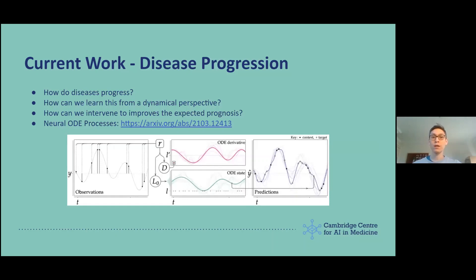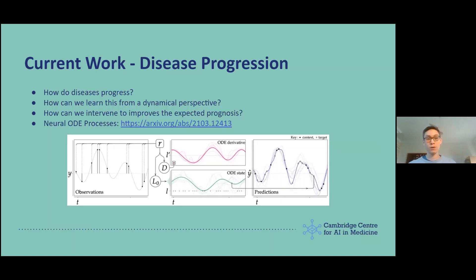Another bit of work I'm looking at is disease progression. We want to think: when a person is ill, how do they progress in time? How can we predict how they will evolve? And can we bring in certain interventions to give the best prognosis? I think we can learn this from a dynamical perspective because underlying all this is biology. One of the previous works I've done is neural ODE processes, where — as shown in the image of the model — you use observations to encode a latent state which evolves dynamically according to differential equations, and then you decode this latent state to give your observations. Importantly, this is a Bayesian approach, so you can get many different possible trajectories to give practitioners the best possible tools to predict what will happen.